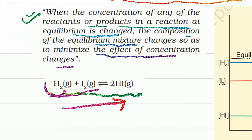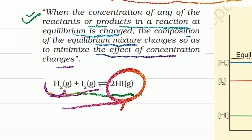When hydrogen's concentration or iodine's concentration increases, the reaction proceeds in the forward direction. If the product side concentration is increased, the reaction proceeds in the backward direction.